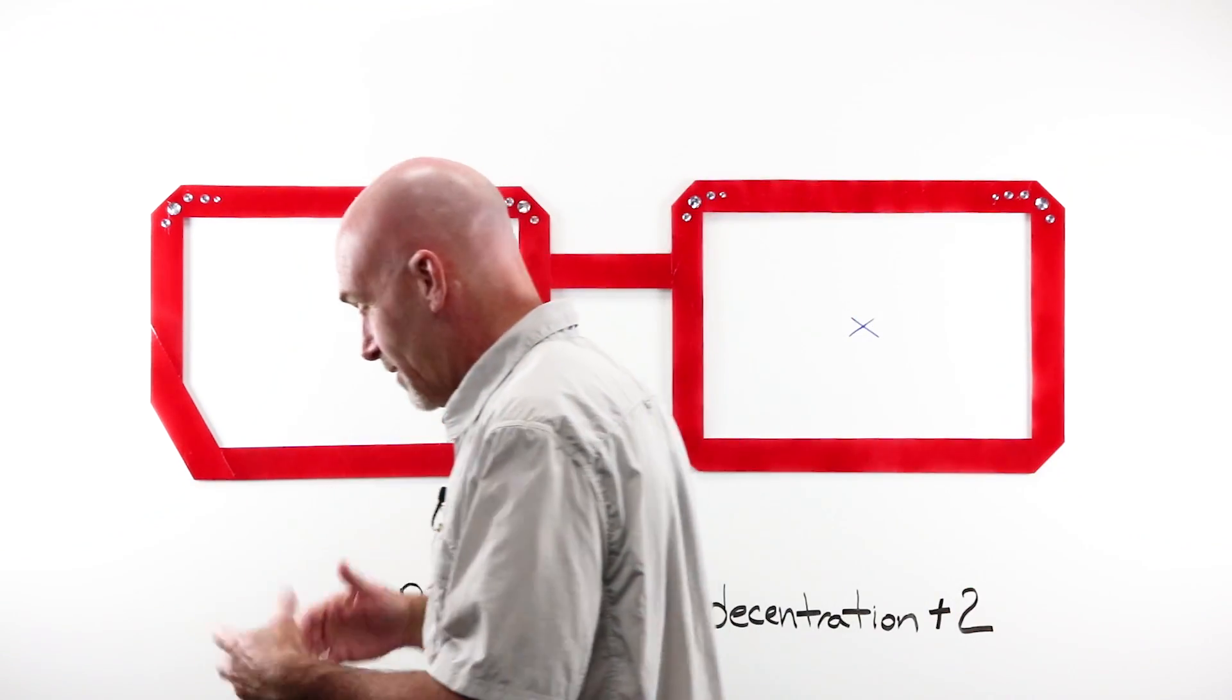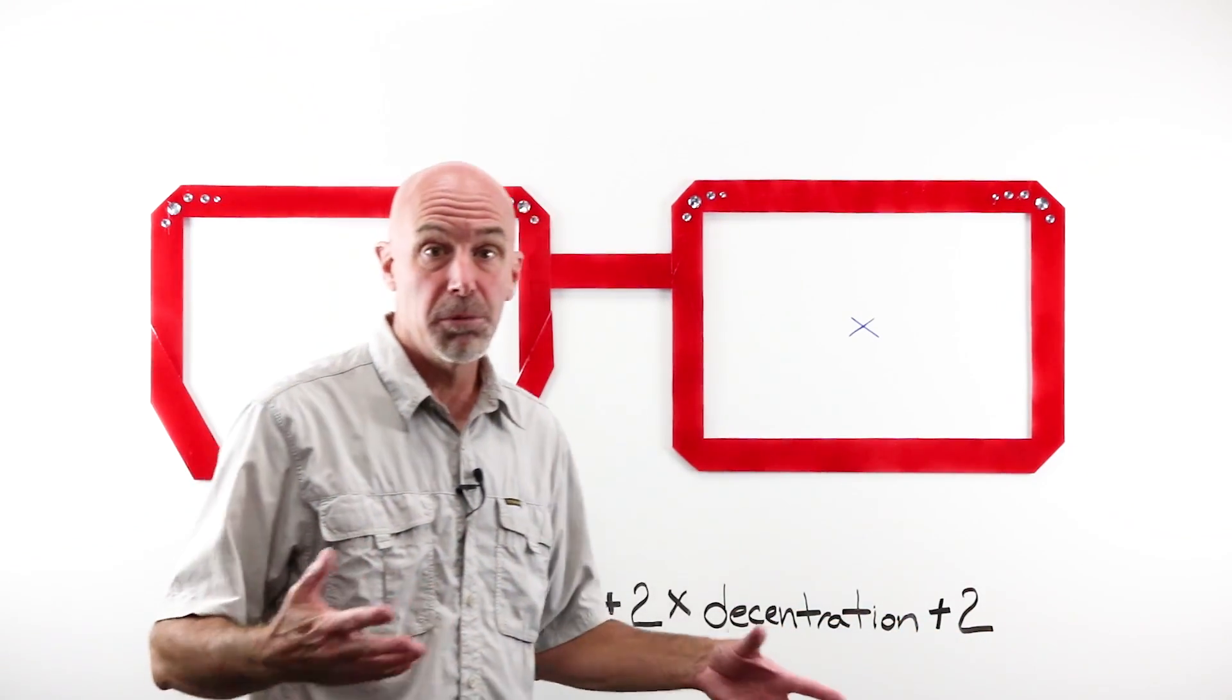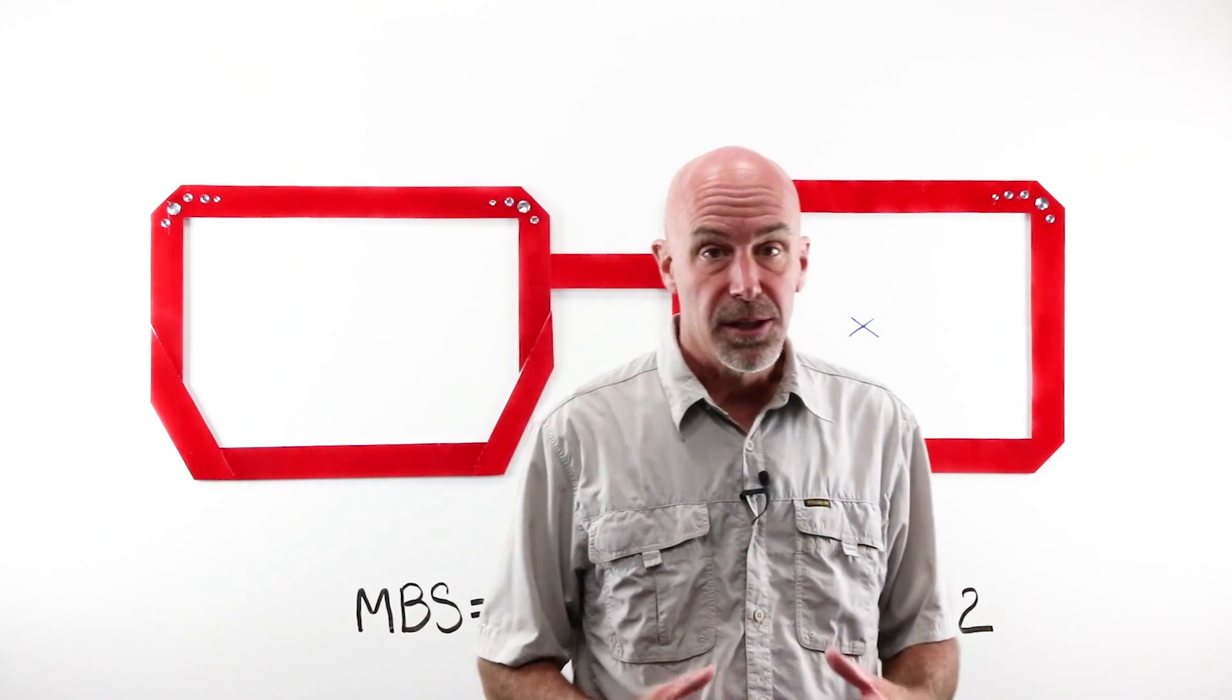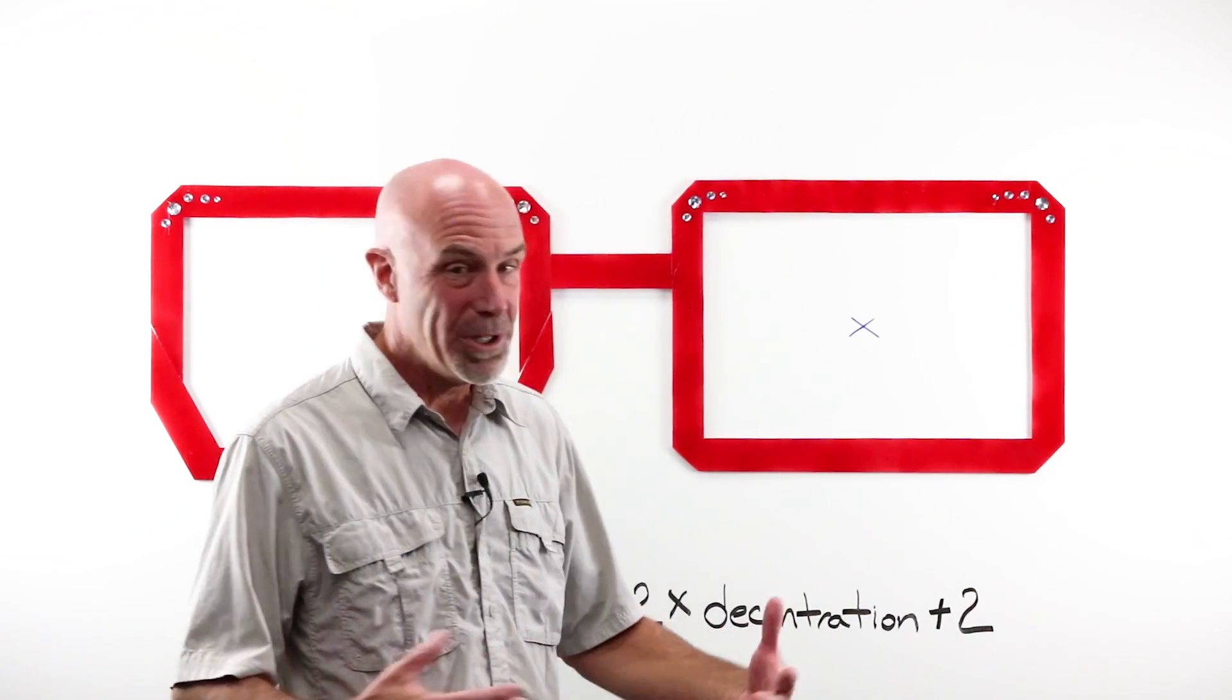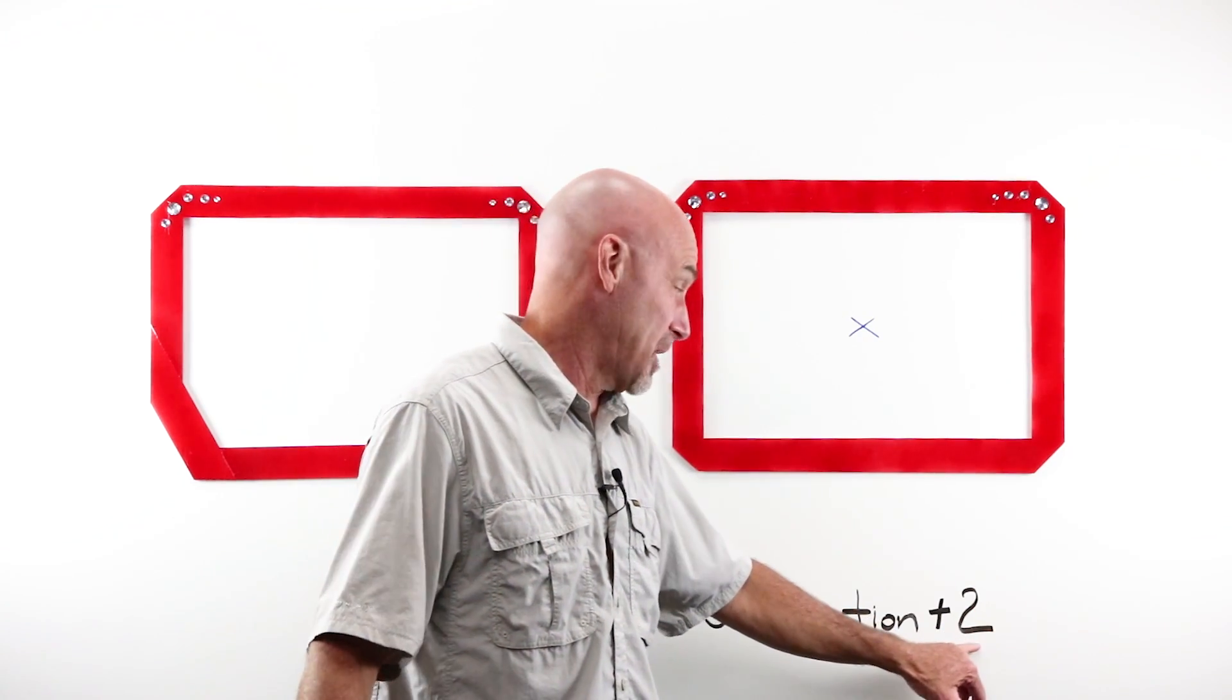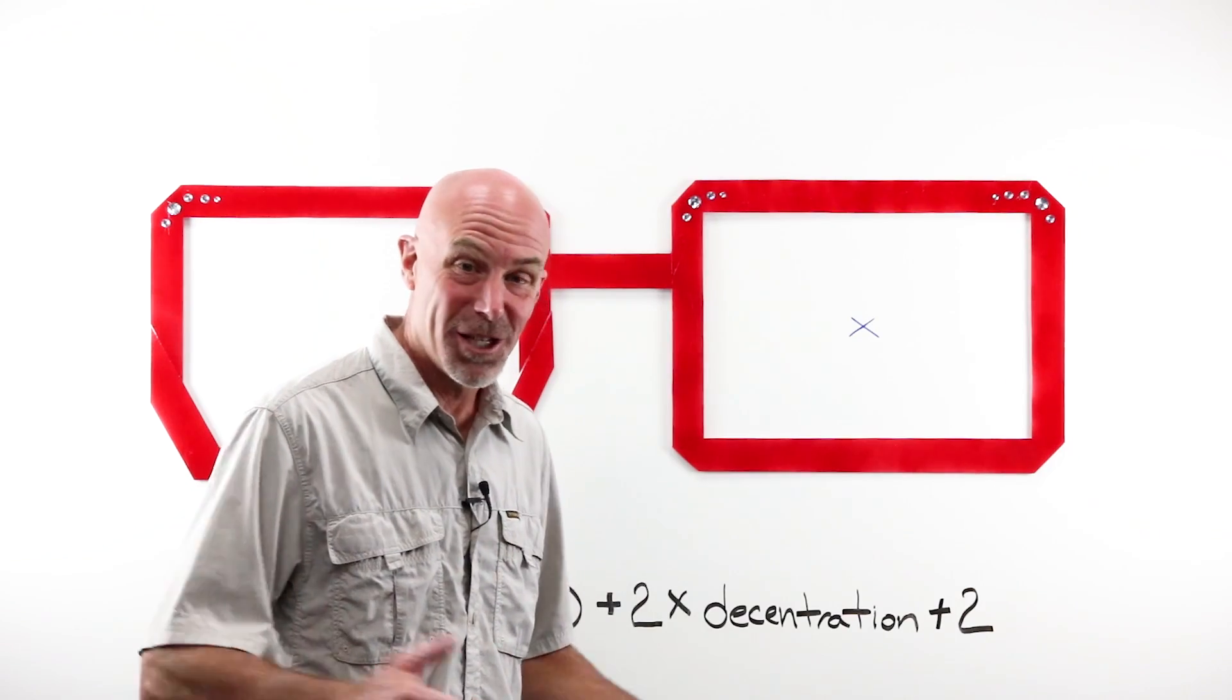I'm using the formula or the calculation for MBS as an ED, plus two times decentration, plus two. That is from the optical formulas tutorial book. I don't think there's really a better source for that kind of information. The other reason I think that a lot of people have trouble with MBS, or minimum blank size, is that it's not really a formula. This plus two is a rule of thumb. It's a good idea. It's a suggestion. You could make it one, you could make it three. The only way to know for certain would be to actually put a lens into an edger, run it and see if it's actually gonna work.